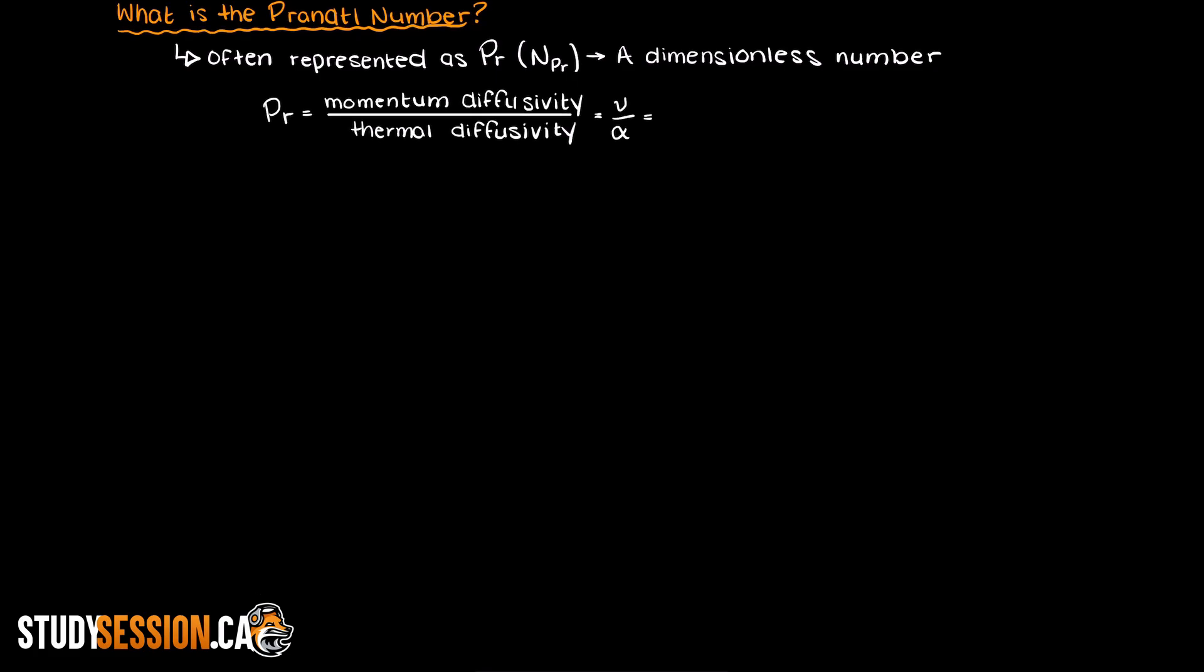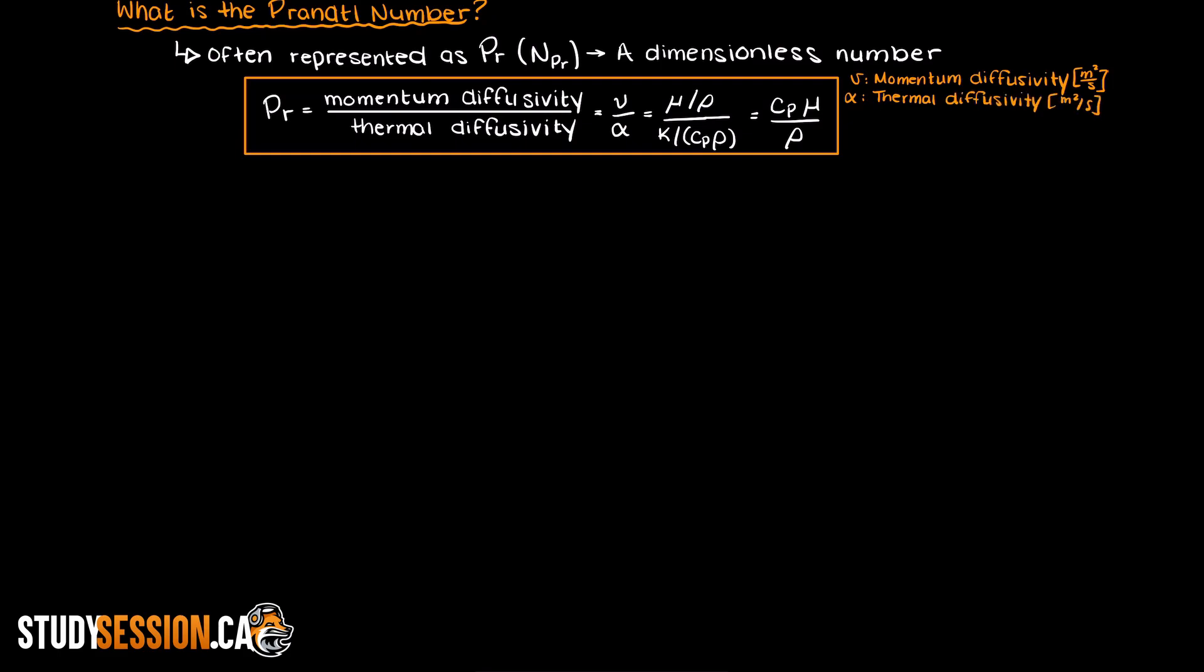The Prandtl number represents the ratio of the momentum diffusivity to the thermal diffusivity. Another way to state this is that we are comparing the relative size of the hydrodynamic boundary layer and that of the thermal boundary layer.